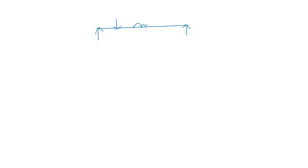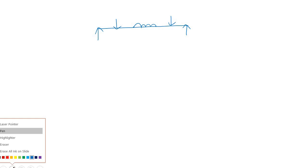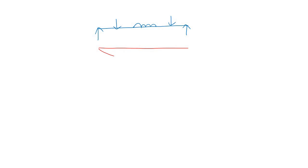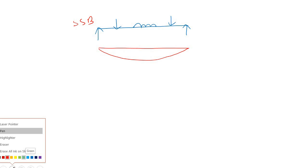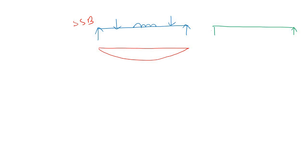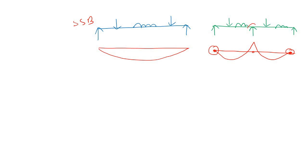To understand this, consider a simply supported beam with some loading. The bending moment diagram for a simply supported beam is positive throughout. Now consider a continuous beam with multiple supports and loading. The bending moment diagram shows that at the end supports the bending moment is zero, but at the intermediate support — which is a column — we have some bending moment.